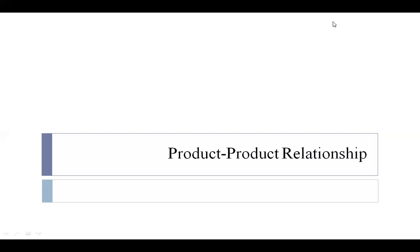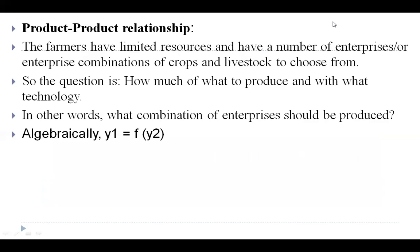These three relationships are very important for your final theory examination. Now in part one of the product-product relationship, we study the basic points. The farmer has limited resources, and has a number of enterprises or enterprise combinations of crops and livestock to choose from.